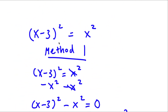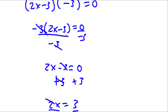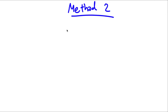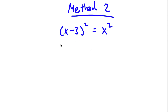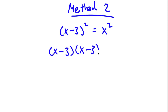Now let's go ahead and do method 2. So our equation was x minus 3 squared is equal to x squared. This time, I'm going to first evaluate x minus 3 squared. So x minus 3 squared is the same as x minus 3 times x minus 3.